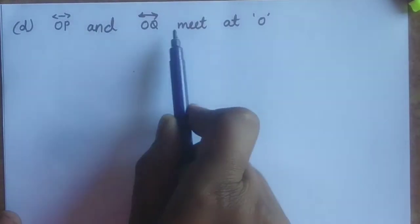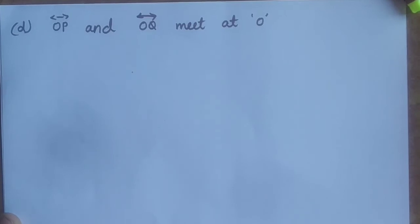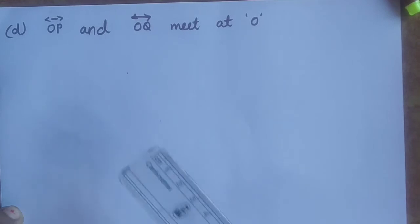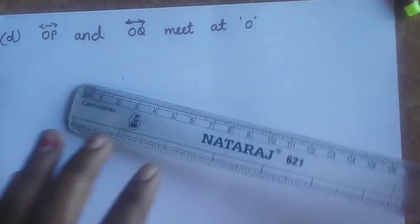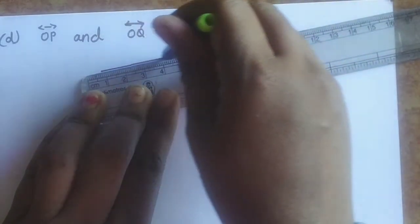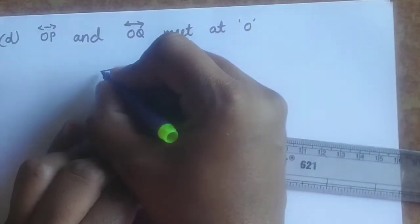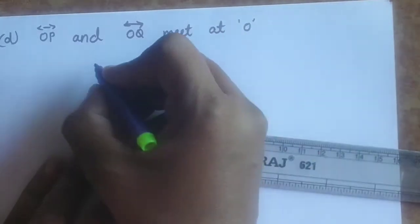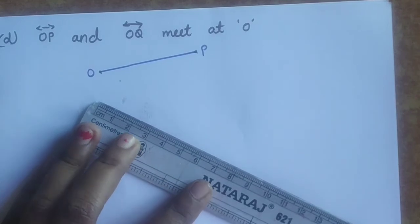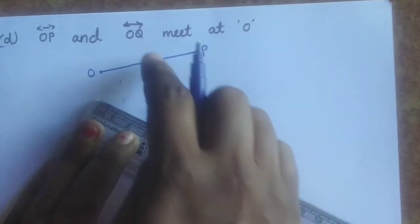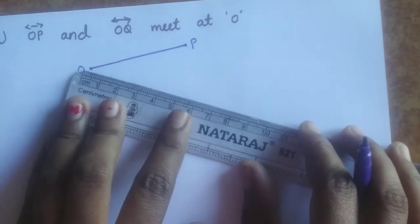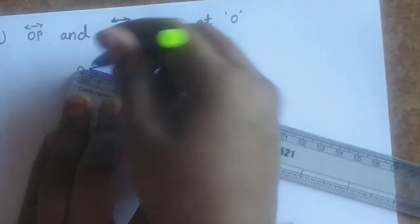Fourth: rays OP and OQ meet at point O. So OP is one ray and OQ is another ray; they share the common point O. We draw both rays originating from point O — ray OP and ray OQ.